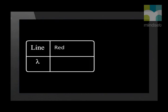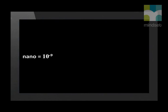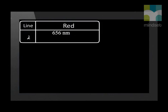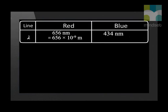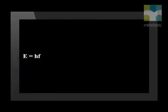A photon of red light has less energy than a photon of blue light. Let's confirm this by calculation. The wavelength of the red band in hydrogen's line emission spectrum is 656 nanometers, which is 656 × 10⁻⁹ meters. The blue line has a wavelength of 434 nanometers. To find the energy of one photon of each color we need to know the frequency, because we use Planck's equation to find the energy of a photon, and for this we must know frequency.